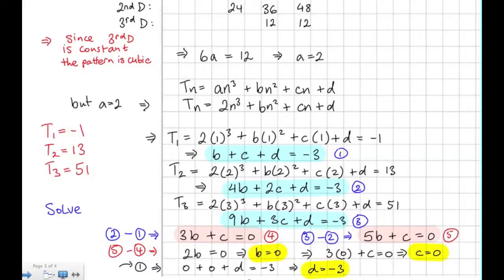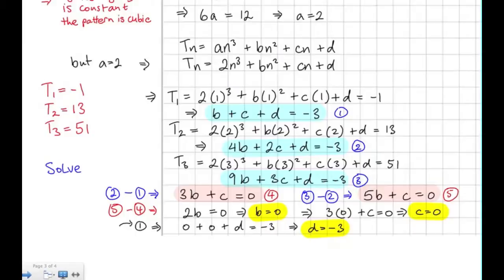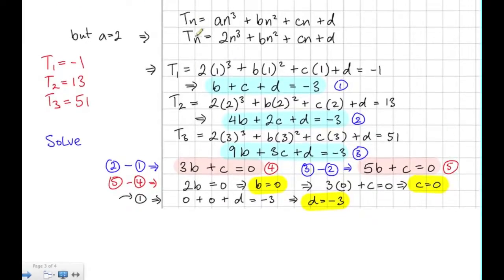So now we know what b, c, and d are. So we should be able to write out our general term. We're basing it on the formula: term n is equal to 2n³ + bn² + cn + d.